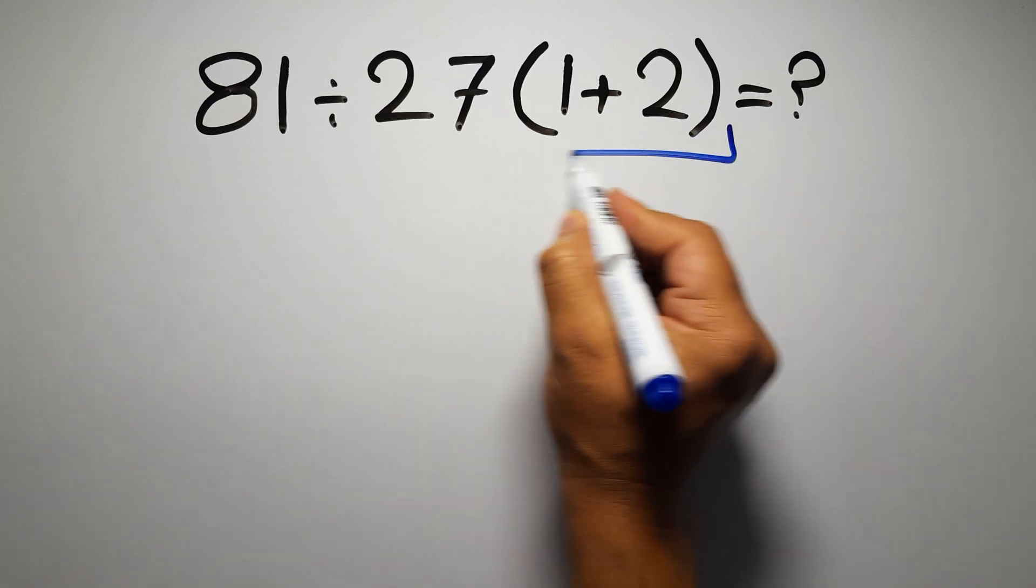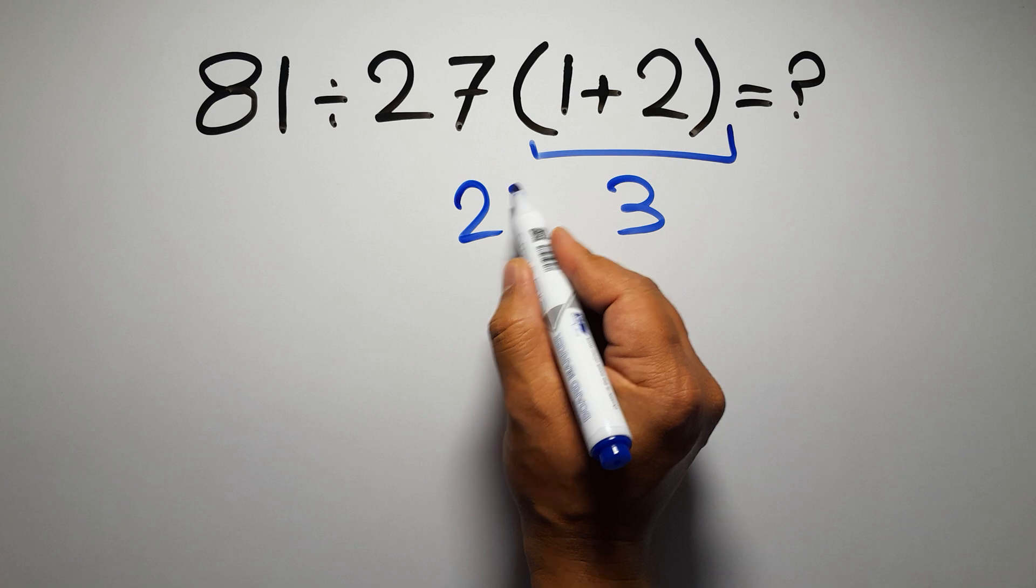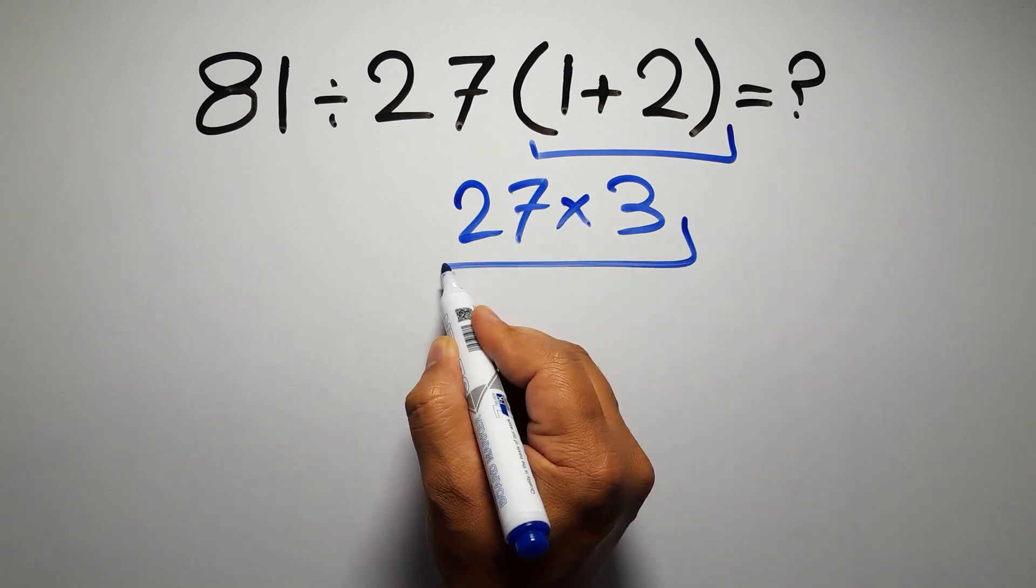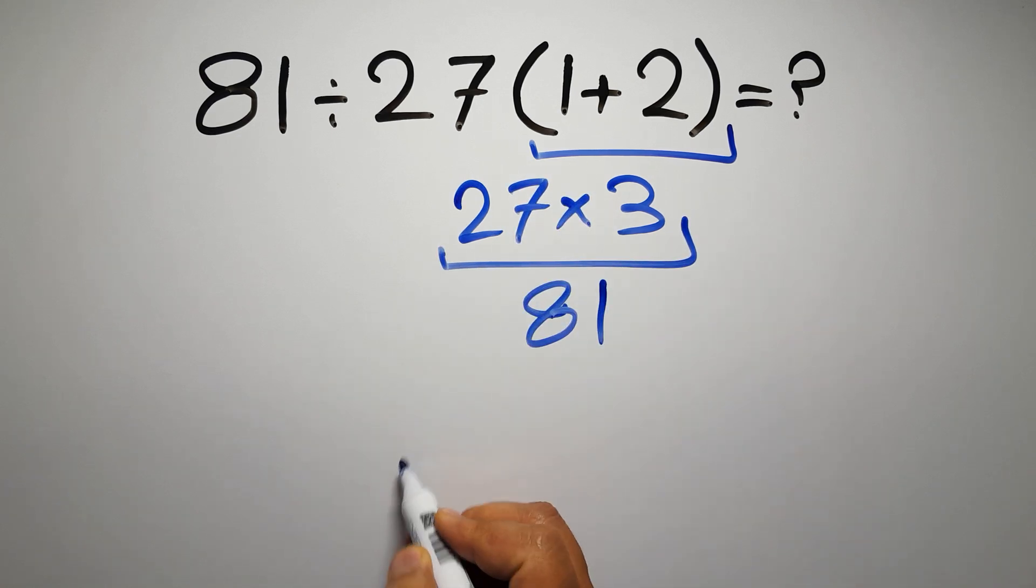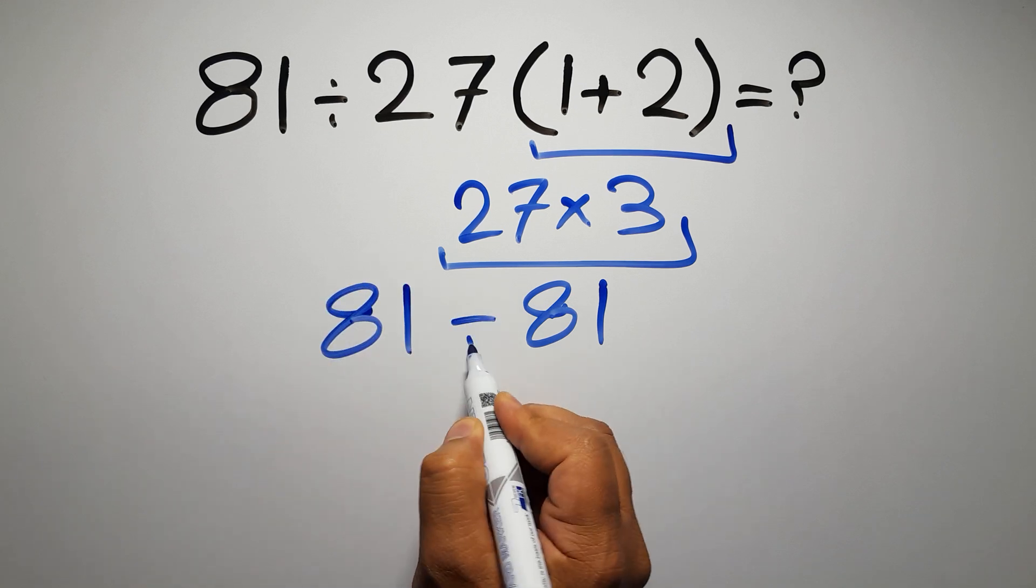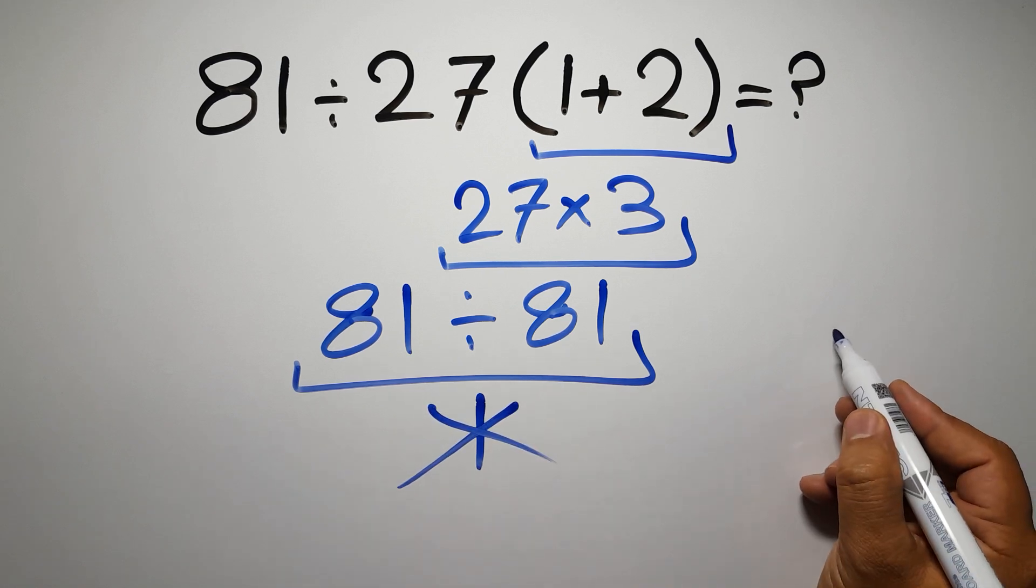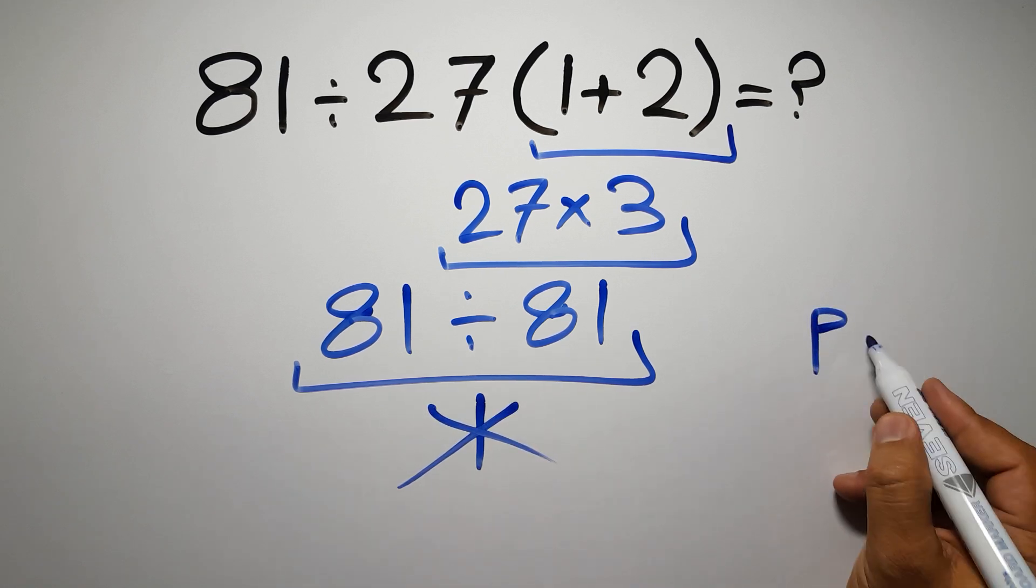1 plus 2 gives us 3 and 27 times 3 equals 81, so 81 divided by 81 is just 1. But this answer is not correct because according to the order of operations first we have to do parentheses, then...